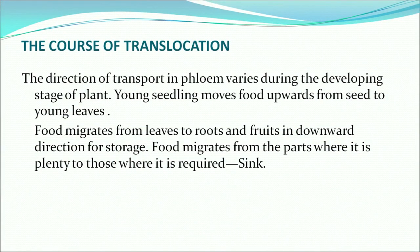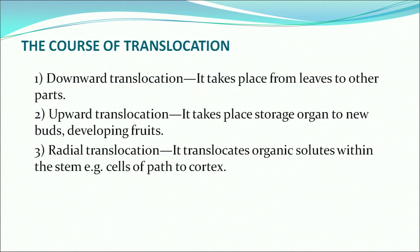The course of translocation takes place in three ways. The direction of transport in phloem varies during the developing stage of the plant. Young seedlings move food upward from seed to young leaves. Food migrates from leaves to roots and fruits in both downward and upward directions. Food migrates from the parts where it is plenty to those where it is required — the sink. The three ways are: downward translocation, upward translocation, and radial translocation. Downward translocation takes place from leaves to other parts, and upward translocation takes place from storage to new buds and developing fruits.